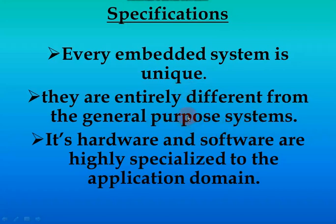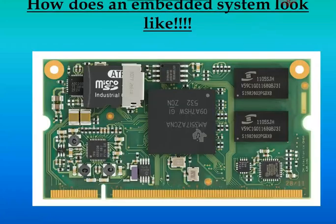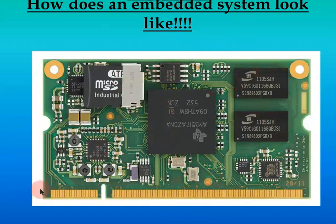Embedded systems continuously use the word 'special' or 'specific' — meaning they are not used for all general purposes; they are used specifically and particularly. That is the main reason why embedded systems came into existence. Their hardware and software are highly specialized to the application domain. An embedded system consists of little components like memory, a microprocessor, and communication ports, all implanted onto a chip — this is how an embedded system looks.